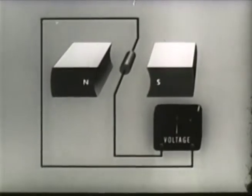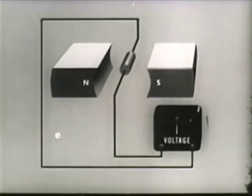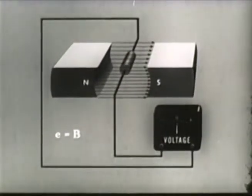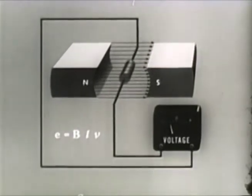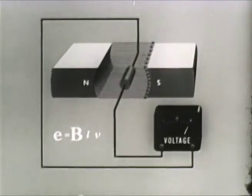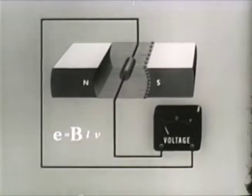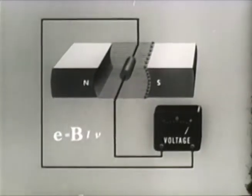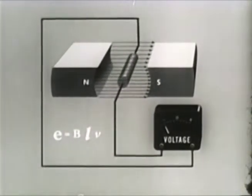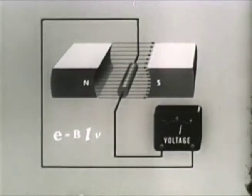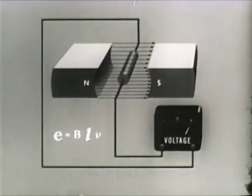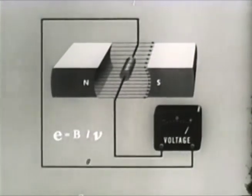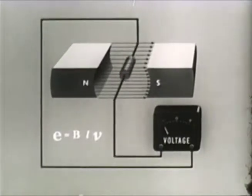The instantaneous EMF E equals B, the strength of the field, times L, the length of the conductor cutting lines of force, times V, the velocity of the conductor. An increase in the number of lines of force or the strength of the field increases the instantaneous EMF in the conductor. Increases in the length of the conductor cutting lines also increases the EMF. And finally, the greater the velocity of the conductor, the greater the EMF.